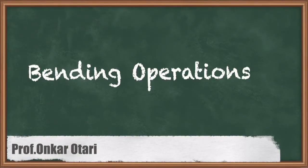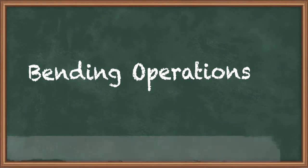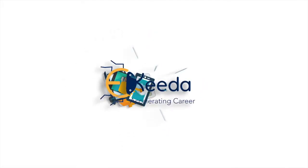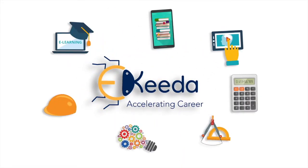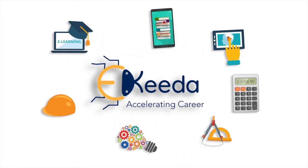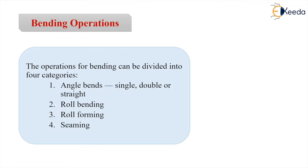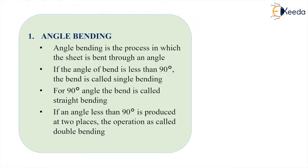Having already seen cutting operations, we now start with bending operations. The operations for bending can be divided into four categories: angle bends, which include single, double, or straight bends; roll bending; roll forming; and the seaming process.